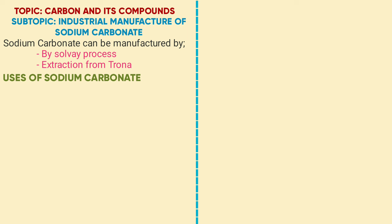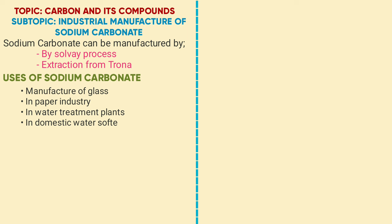Sodium carbonate is used in the manufacture of glass. It is used in the paper industry. It is used in water treatment plants. It is used in domestic water softening. It is used in the manufacture of sodium chemicals, which includes sodium hydroxide.